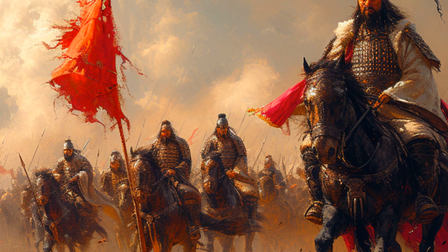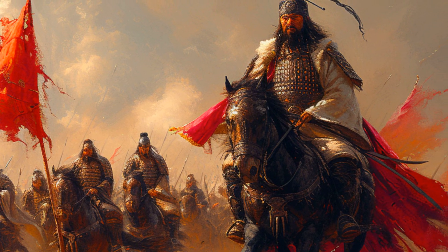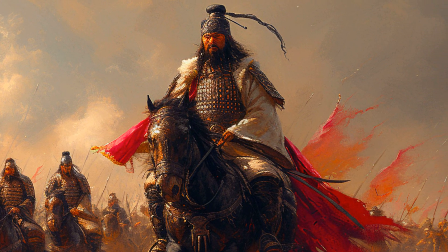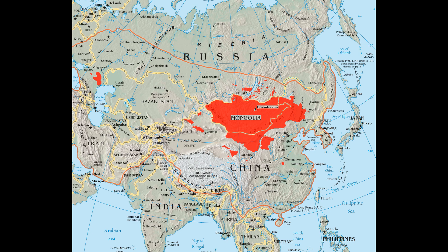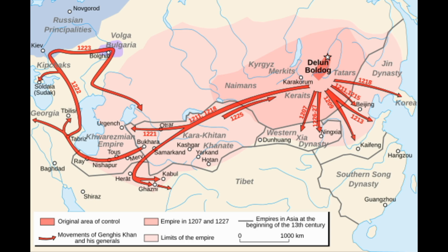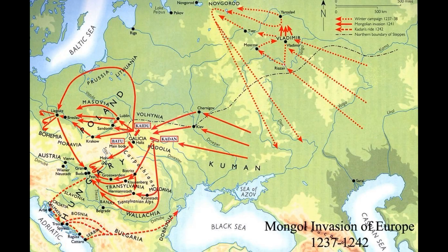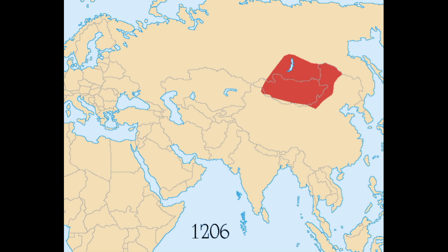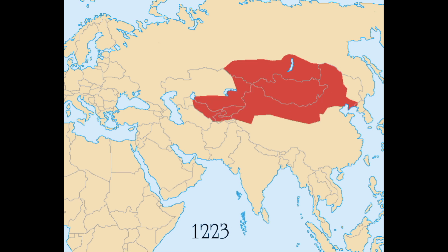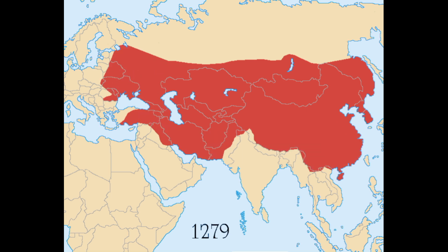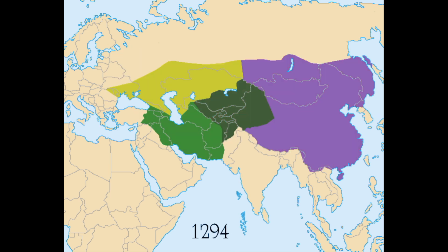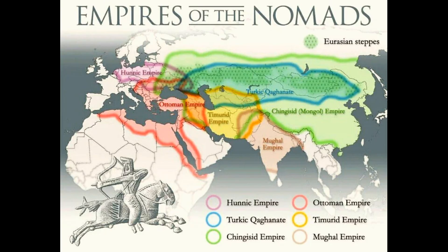Later, in the 13th century, the Mongols, led by Genghis Khan and his successors, set out from the heartland on an unprecedented series of conquests that devastated Asia and reached as far as Eastern Europe. From their base in the heartland, the Mongols established the largest contiguous land empire in history, utilizing a combination of military strategy, mobility, and control over vast territories. They exploited the Eurasian plain to move troops quickly and expand Mongol influence, showing how the heartland could serve as a launching pad for the conquest of fertile lands and economic centers surrounding it.